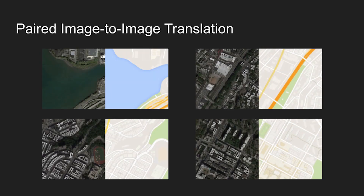In some cases, like the one you're seeing here, images can be split up into two distinct domains. Here, the domains are satellite images and map images. Let's say we wanted to make an AI which translates satellite images into map images.